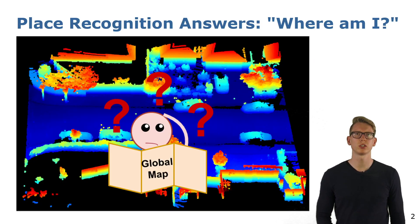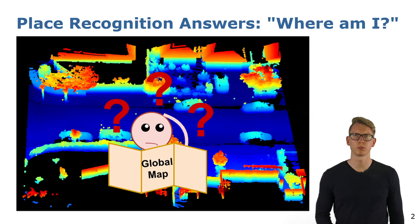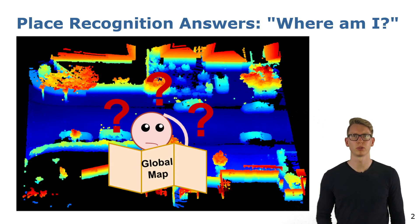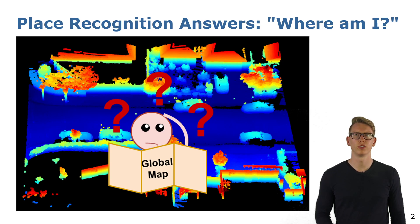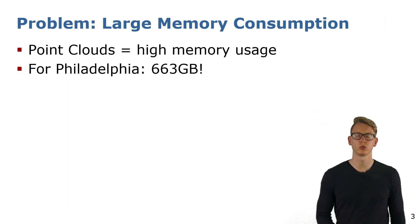Place recognition is an important building block for many robotic systems. A pre-recorded global 3D map allows vehicles to localize by comparing the current local surroundings with the given map. Other use cases are SLAM systems, which often require detecting loop closures to deal with drift and to create consistent maps. For this, you compare the current location with previously visited ones.